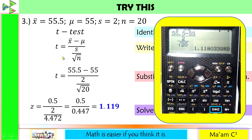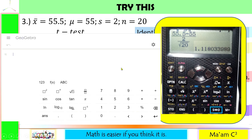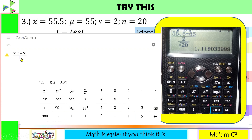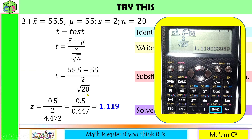What I tell my students is to encode the numbers the way they are written in the formula. I have found a scientific calculator online from GeoGebra that works the same as my scientific calculator. Since we need a fraction, press the fraction button. The cursor is now in the numerator — key in 55.5 minus 55. Put the cursor down to the denominator. Press the fraction button again for the inner fraction: input 2 as sigma, put the cursor below, and enter square root of 20. This gives you the exact answer.